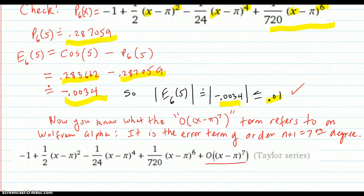One last thing. So now you know what the O(x minus pi) to the seventh terminology is on Wolfram Alpha. Because they usually write it like this. They give you some terms. And then they write O. That means order of. It's the error term of order n plus 1 to the seventh degree.